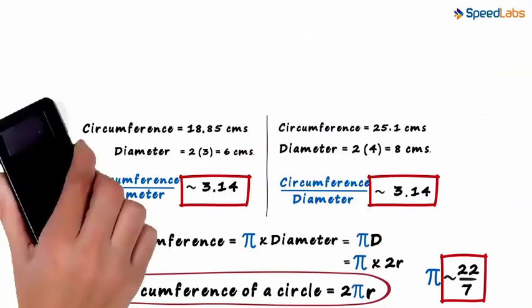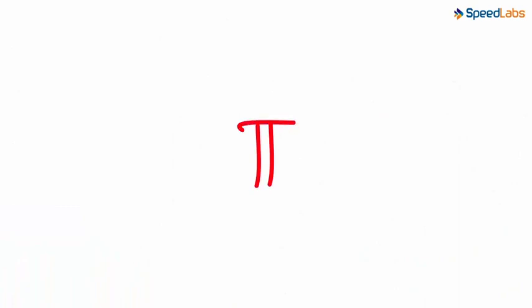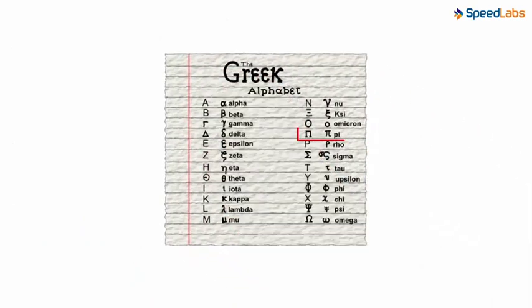But why do we use this symbol for pi? What is this symbol? Pi is actually the sixteenth letter of the Greek alphabet. But the question still remains, why the sixteenth letter?